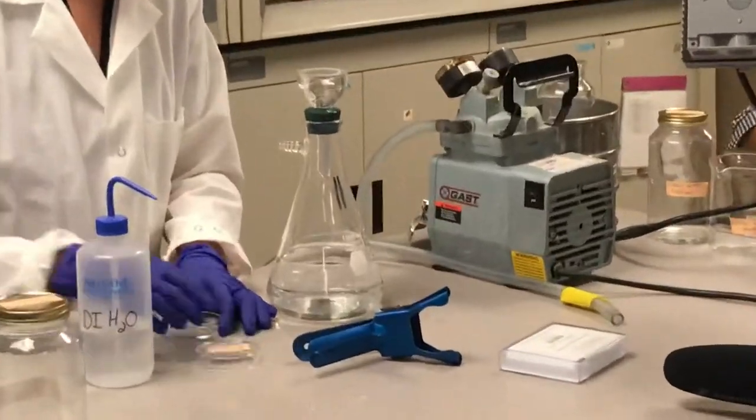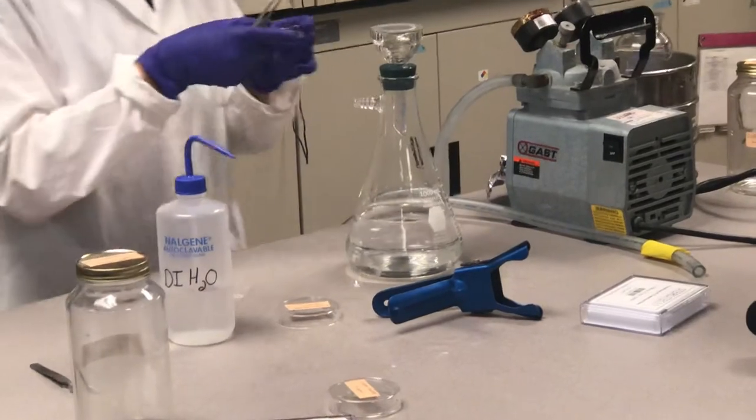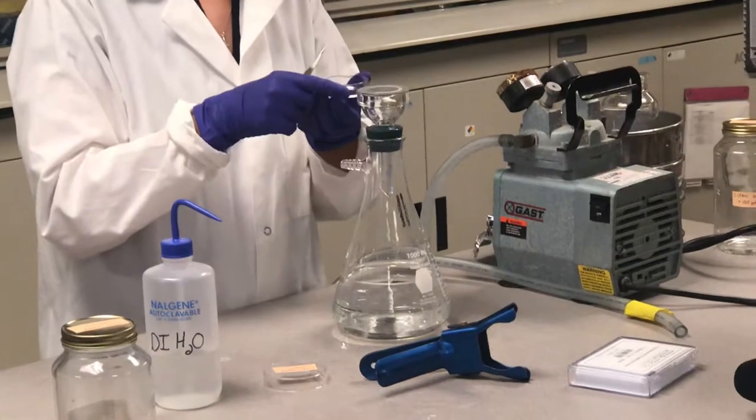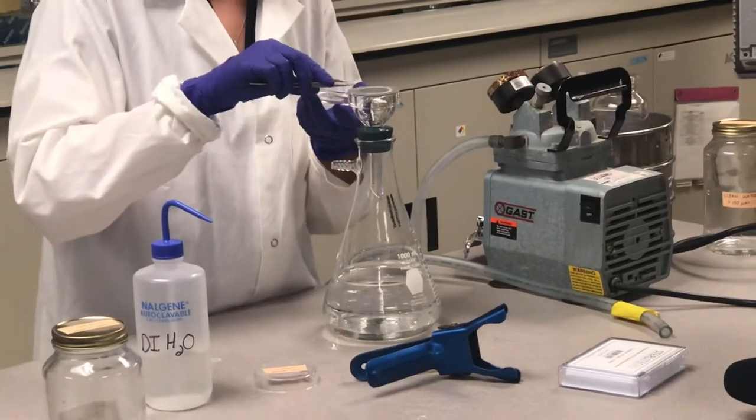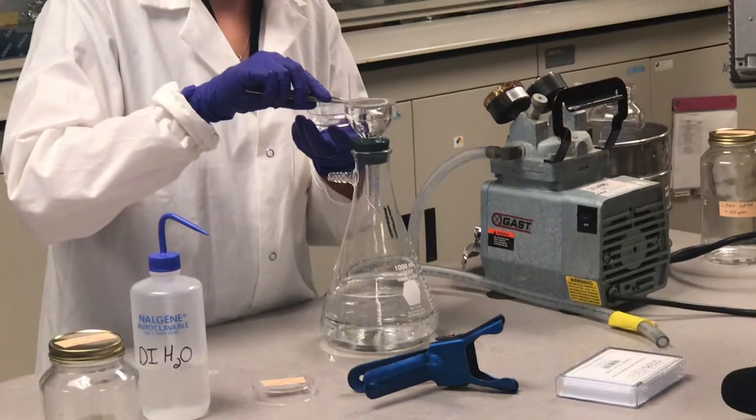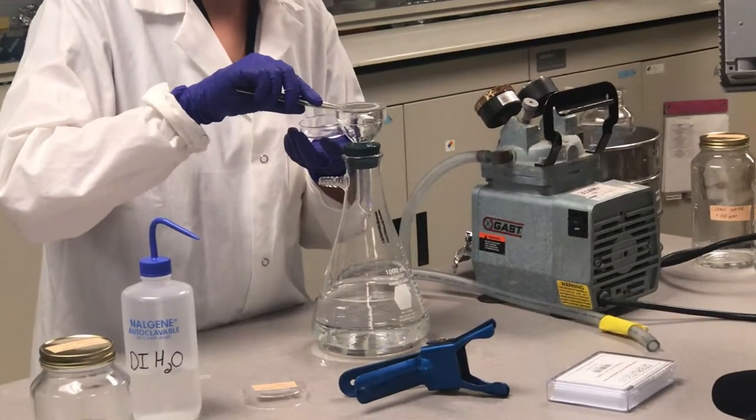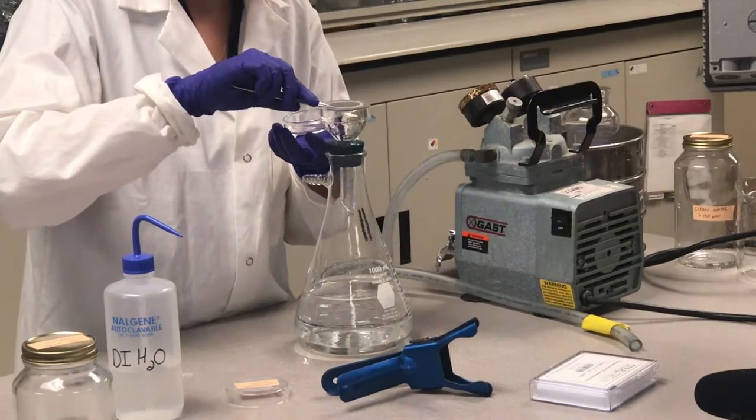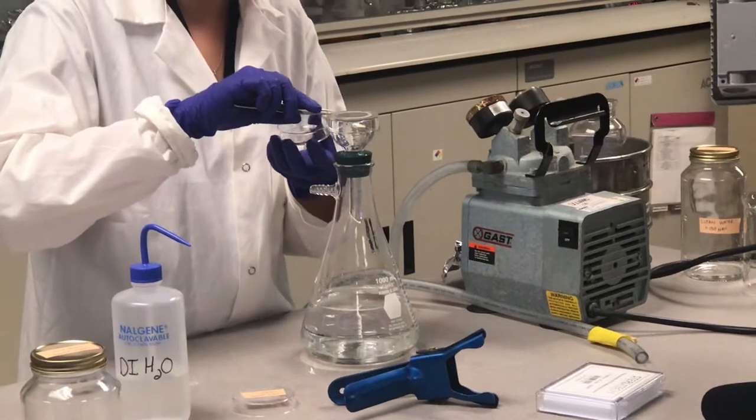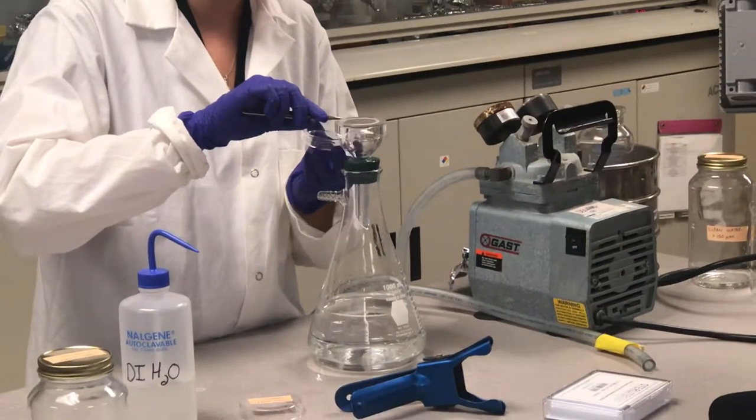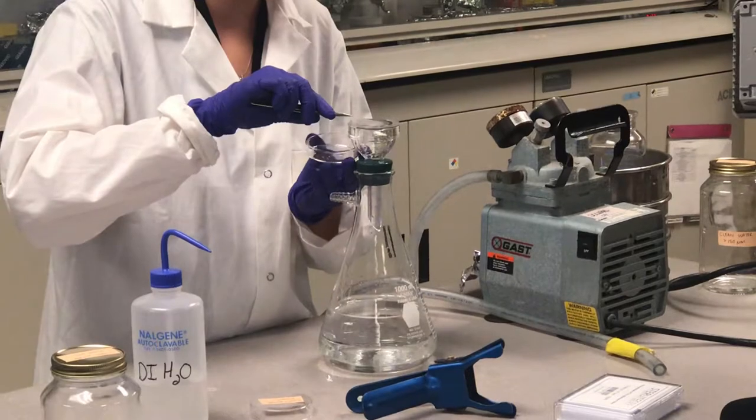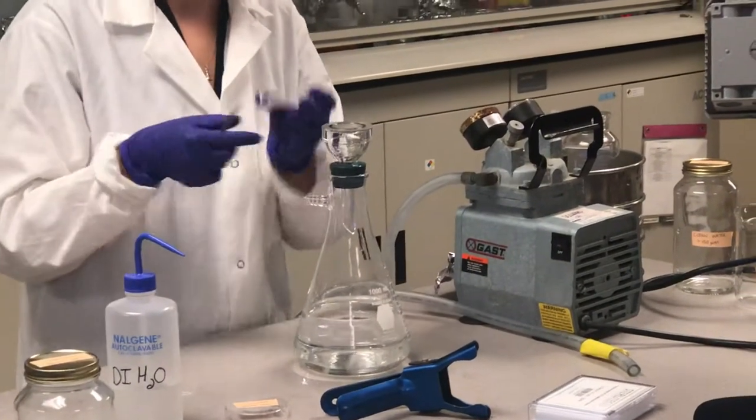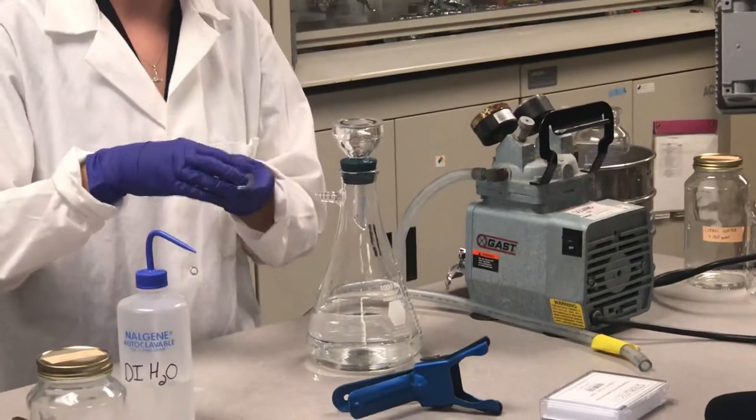And then you get your petri dish ready. And you can use your forceps for this. So what we do in our lab, people have different techniques for doing this, but what we find the easiest way to do is to hold your petri dish really close to the head of the filter. And you want to just slide your tweezers underneath the edge of your filter. Which I'm struggling to do. And then you just gently pull it away from the top of the filter holder and slide it into your petri dish. And then you have another size fraction, your above 20 micron size fraction.